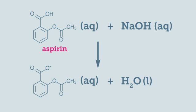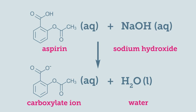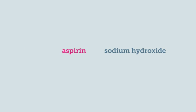When a weak acid such as aspirin reacts with a strong base, the carboxylic acid group is fully deprotonated to form a carboxylate ion and water. A titration experiment with aspirin and sodium hydroxide is an example of a weak acid, strong base titration.